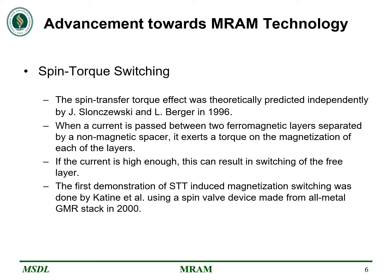Then came Spin Torque Switching, first theorized by J.S. Slonczewski and Al Berger in 1996. As mentioned, two ferromagnetic materials are separated by a non-magnetic spacer or dielectric. This configuration exerts a torque of magnetization on each layer, resulting in local magnetization. If the current is high enough between these materials, this can result in the switching of the free layer. It was demonstrated by Katine et al. in 2000.